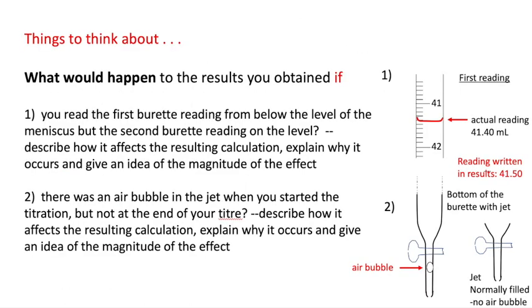What would happen if, so you've got an incorrect burette reading, you're reading from below the level of the meniscus. So what would that do to your final calculation? And you can apply this to the percentage of calcium carbonate in the eggshell. But obviously would apply to any titration that you do. And the second one is if you have an air bubble in the jet, so you haven't actually completely filled the jet, which you normally do. So what's going to happen when you turn the tap on, what's going to happen to your actual results of your calculation?